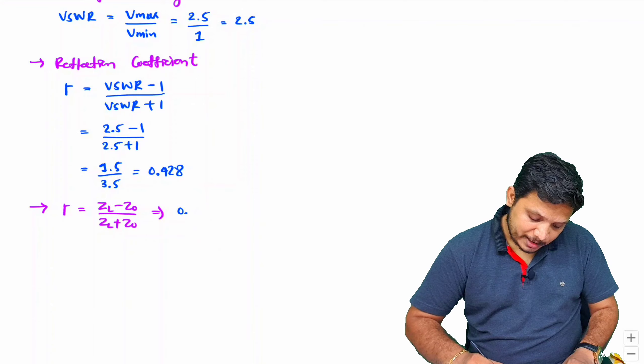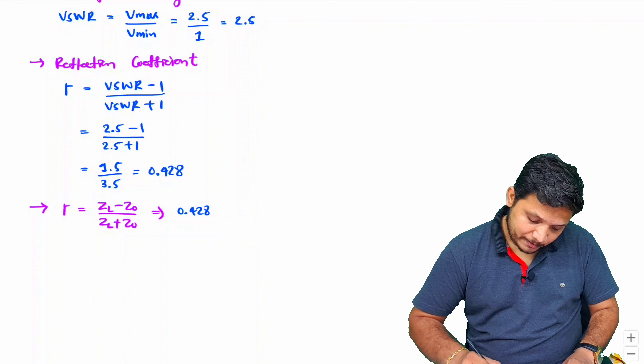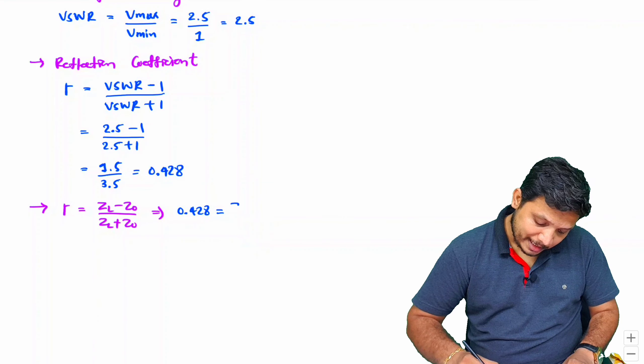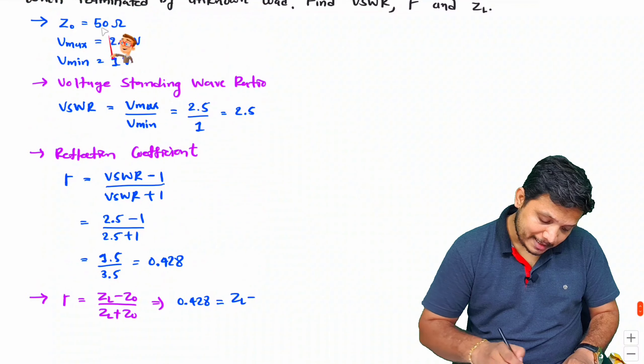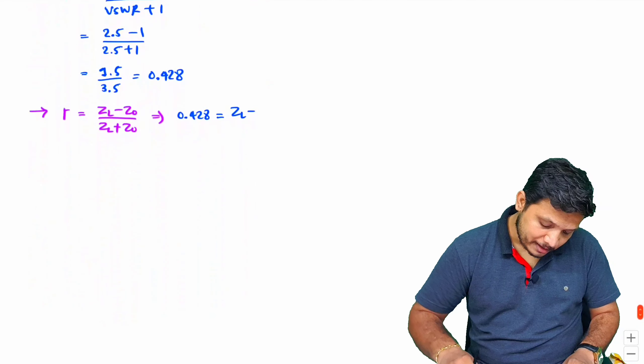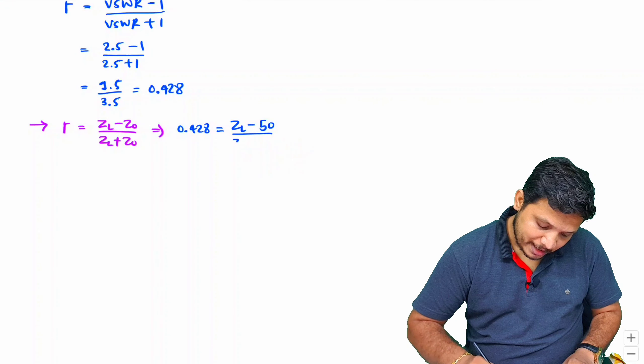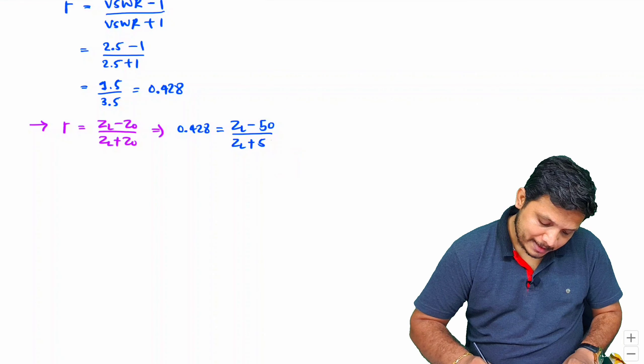Reflection coefficient is ZL minus Z0 divided by ZL plus Z0. So 0.428 equals ZL minus Z0, and Z0 is 50 ohm.